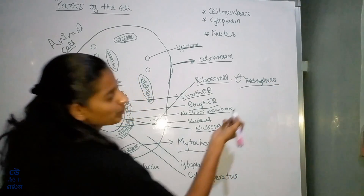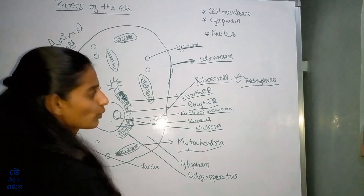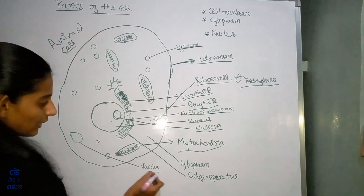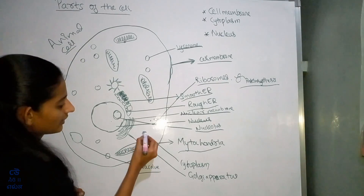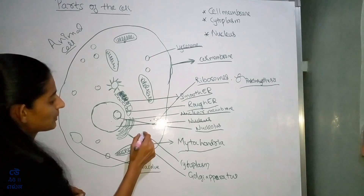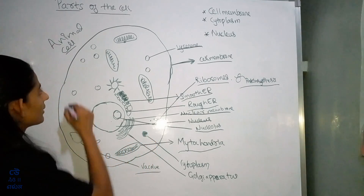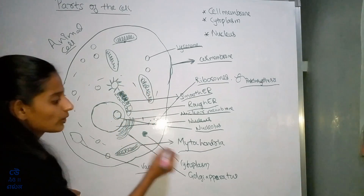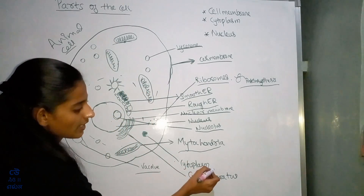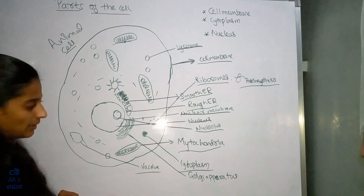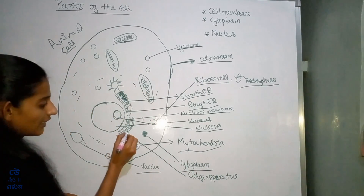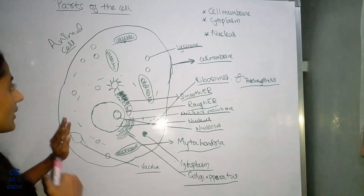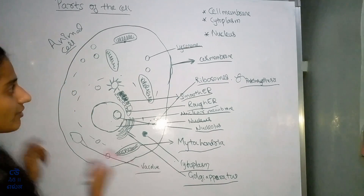The function of ribosomes is protein synthesis. This is a vacuole, and the jelly-like substance we can find in the cell — this whole thing is known as cytoplasm. And this is the Golgi apparatus. So these are the different parts of the cell.